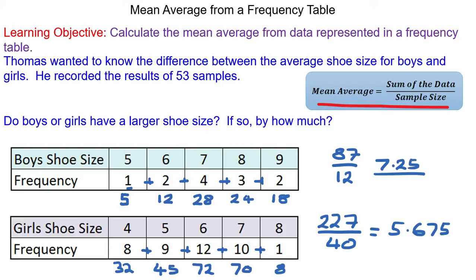So using the data we've got boys have a shoe size bigger than that of the average girl. To work out the difference between the two, five point two five take away five point six seven five is going to be one point five seven five.